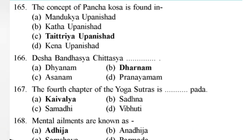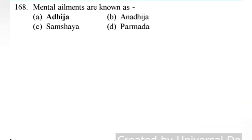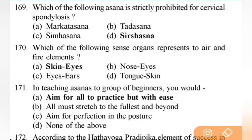Deshabandha Chittasya is Dharana. Next: the fourth chapter of Yoga Sutras is Kaivalya Pada. Next: mental elements are known as Adhyatmika — important question.